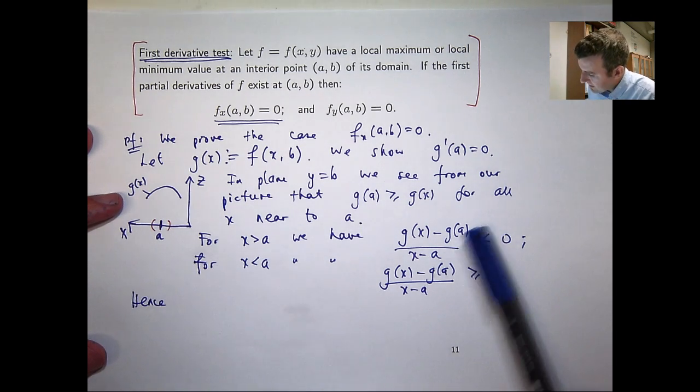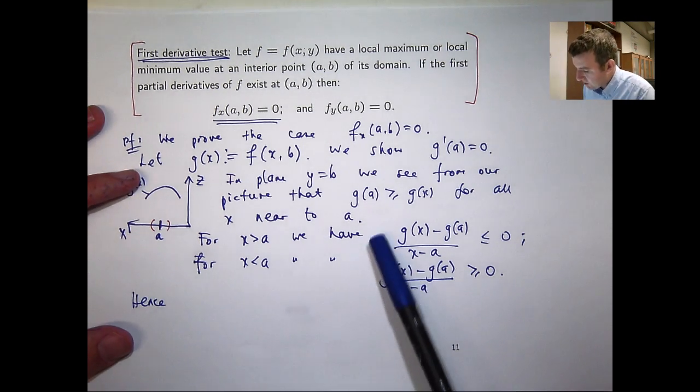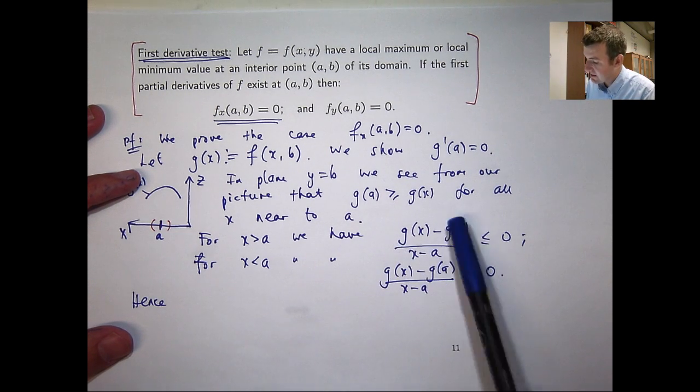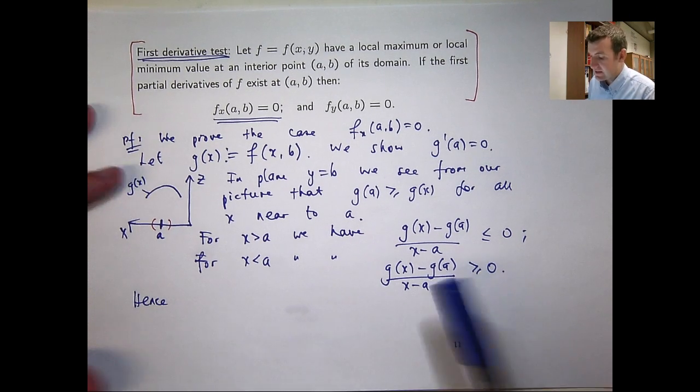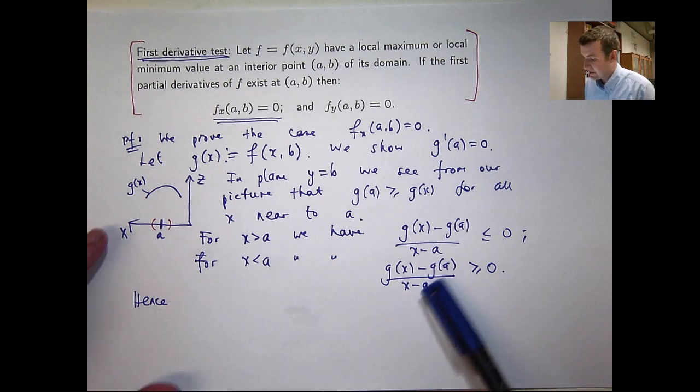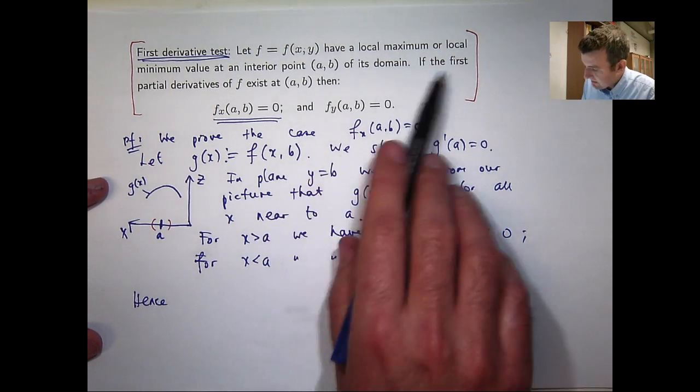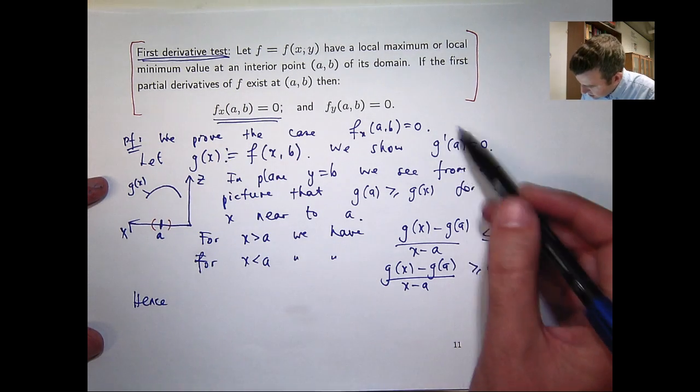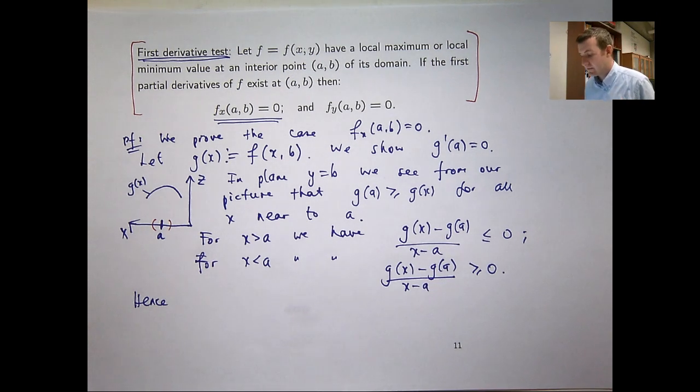So if we combine these inequalities, we can come up with the following. Well, if I take say a right hand limit in here, I know the right hand limit as x approaches a is going to be less than or equal to zero. The left hand limit in here as x approaches a from the left is going to be greater than or equal to zero. But I know because the partial derivatives of f exist at this point that g prime of a must exist. So these two limits, the left hand limit and the right hand limit must be equal.